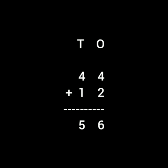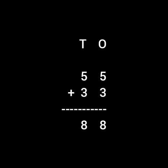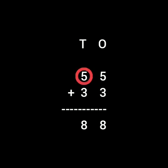Now let us see the next example: 55 plus 33. Here 5 is written under the 10's column and 5 under the 1's column. Again 3 under the 10's column and 3 under the 1's column. So starting from the ones side: 5 plus 3. On one hand take out 5 fingers and on the other hand 3 fingers. Count them together: 1, 2, 3, 4, 5, 6, 7, 8. So you write 8. Again the tens column is the same: 5 plus 3 equals 8. So 55 plus 33 is 88.